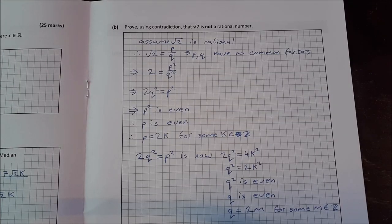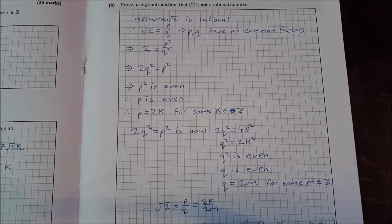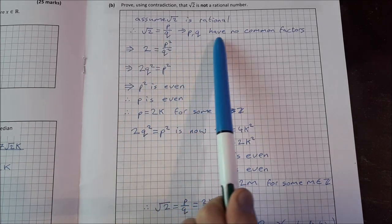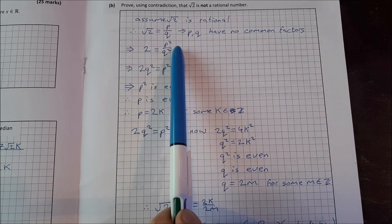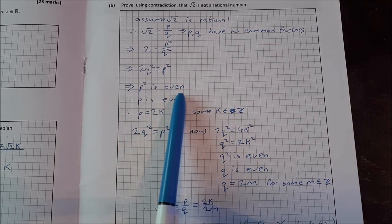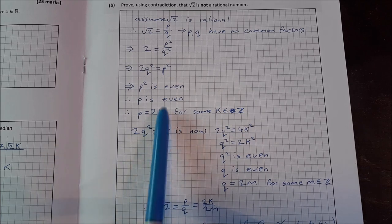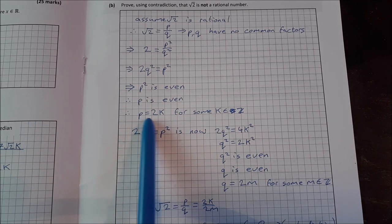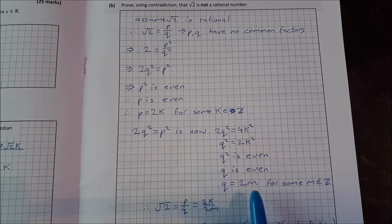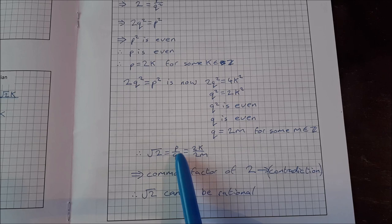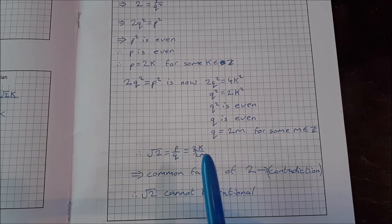Part B: Prove by contradiction that √2 is irrational. Assume √2 is rational, so √2 = p/q where p and q share no common factors. Then 2q² = p², so p² is even, meaning p is even; write p = 2k. Doing the same for q gives q = 2m. Then p and q share the common factor 2 — a contradiction. Therefore √2 is irrational.